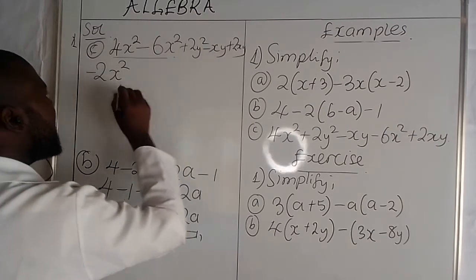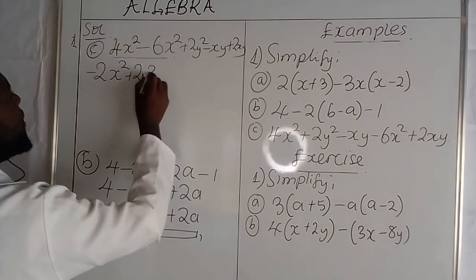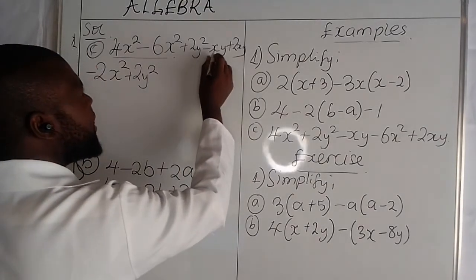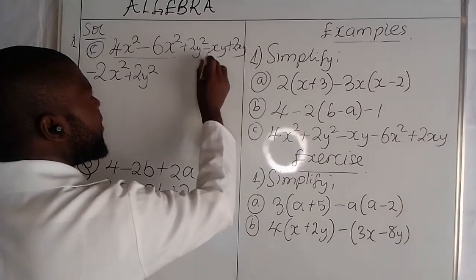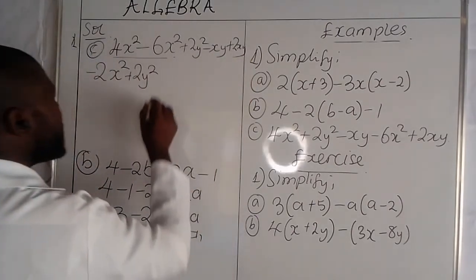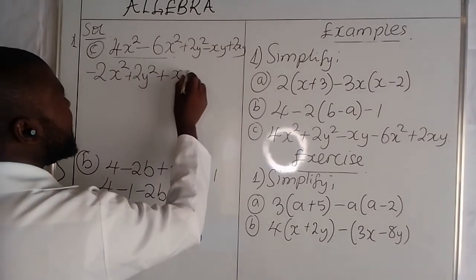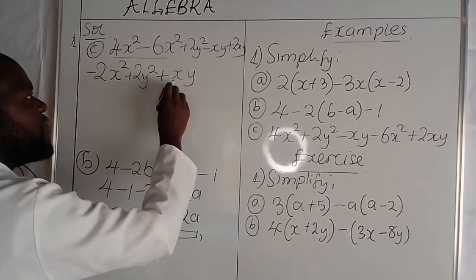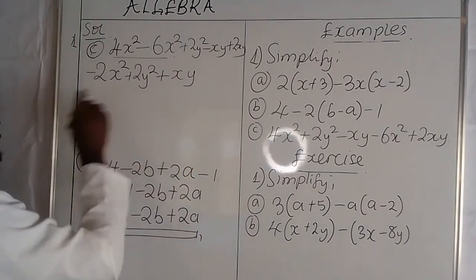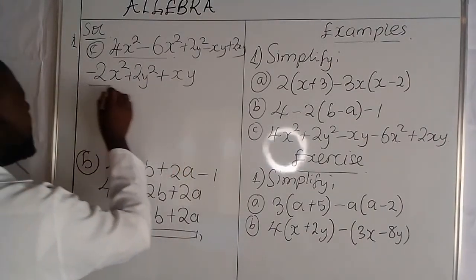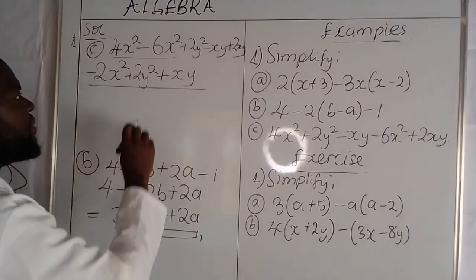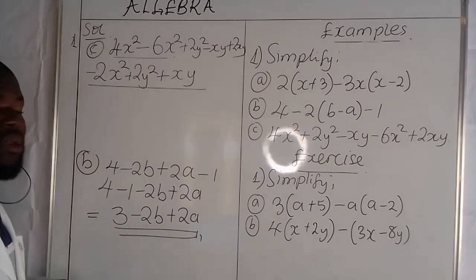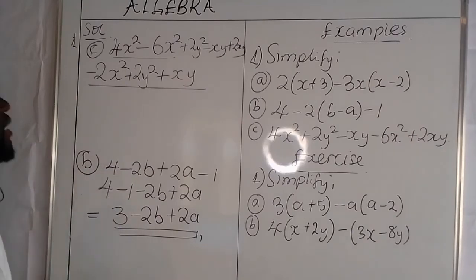Plus 2y squared is alone and remains as it is. Now we have negative xy plus 2xy, which gives us positive xy. So from negative xy plus 2xy, we get positive xy. When you look at this final expression, there is nothing more we can do — these are all unlike terms with different variables, each one on its own. So we simply end here.